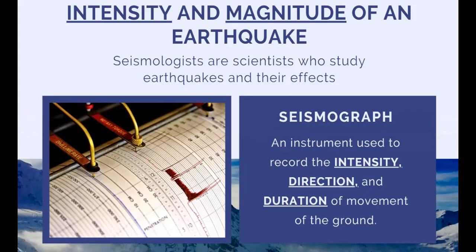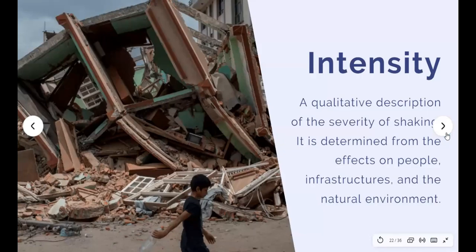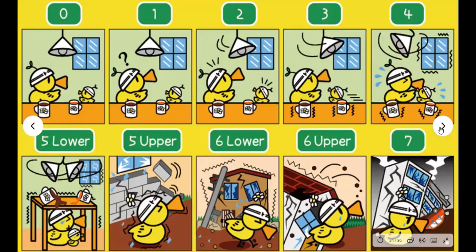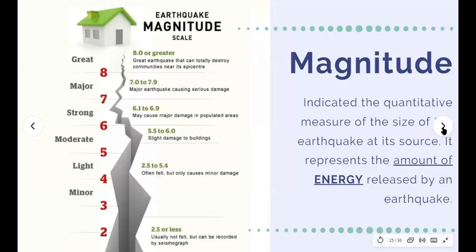Seismologists are scientists who study earthquakes and their effects. They gather data and monitor the Earth's crust using a seismograph — an instrument used to record the intensity, direction, and duration of ground movement. The record produced by the seismograph is called a seismogram. Intensity gives a qualitative description of the severity of shaking, determined from effects on people, infrastructure, and the natural environment, using the Modified Mercalli Intensity Scale. The magnitude of an earthquake is a quantitative measure of its size at its source, representing the amount of energy released, measured using the Richter magnitude scale.